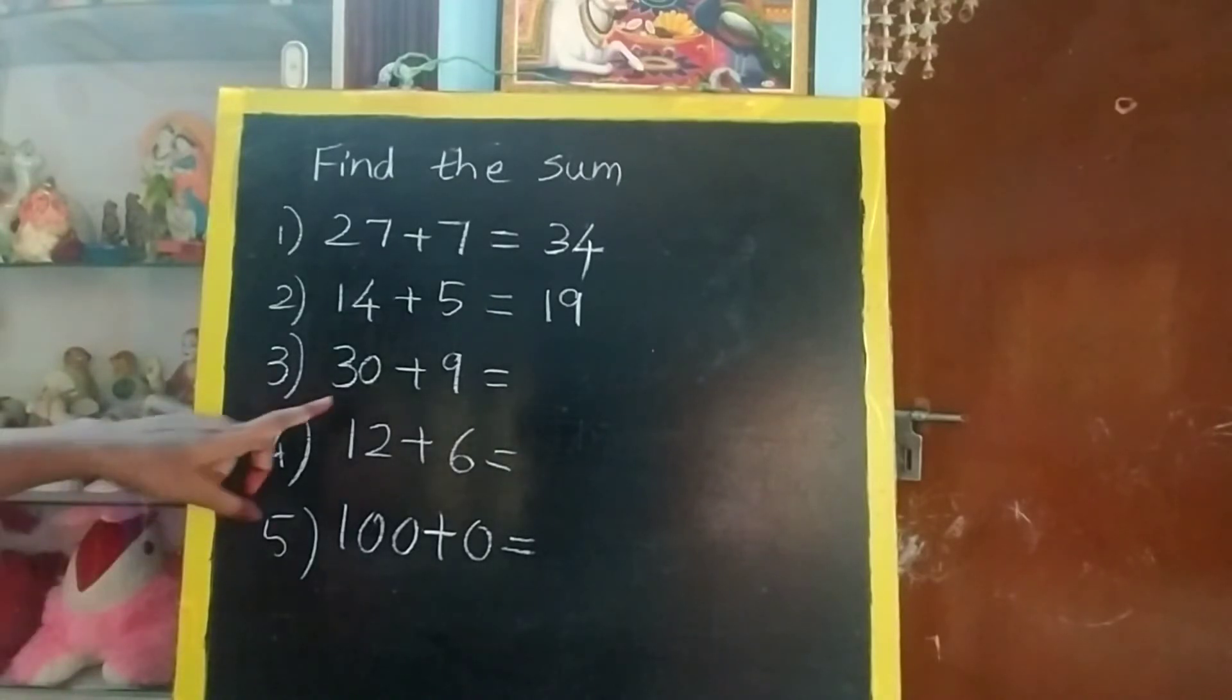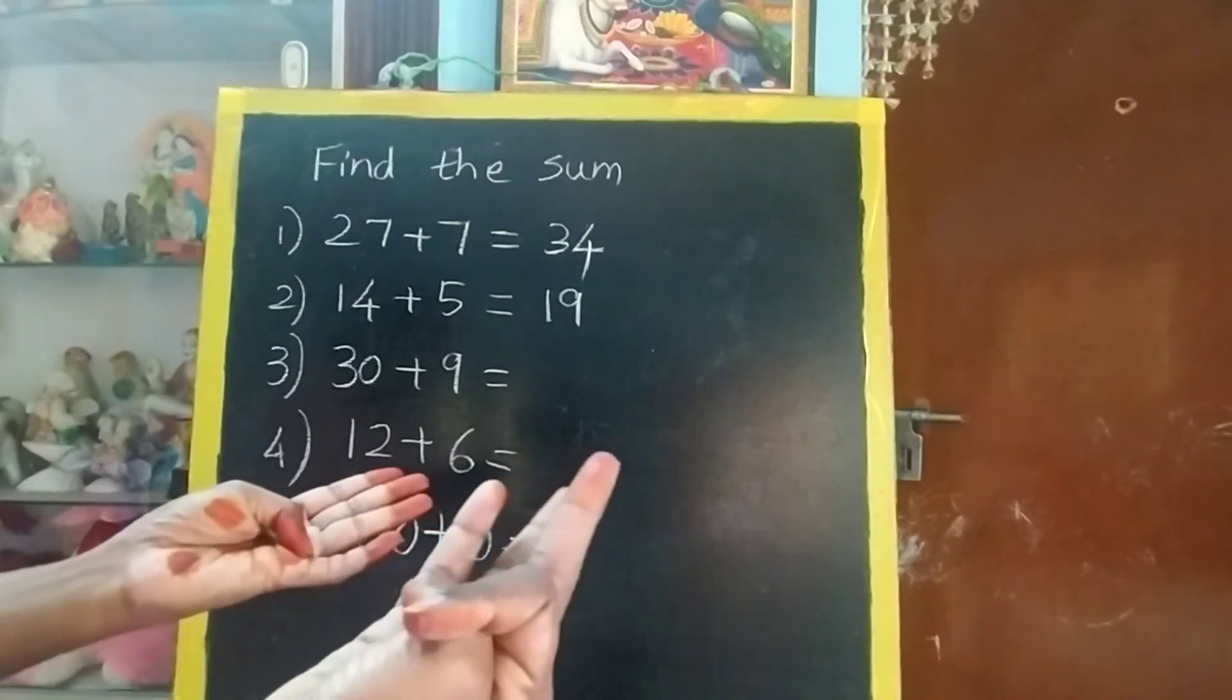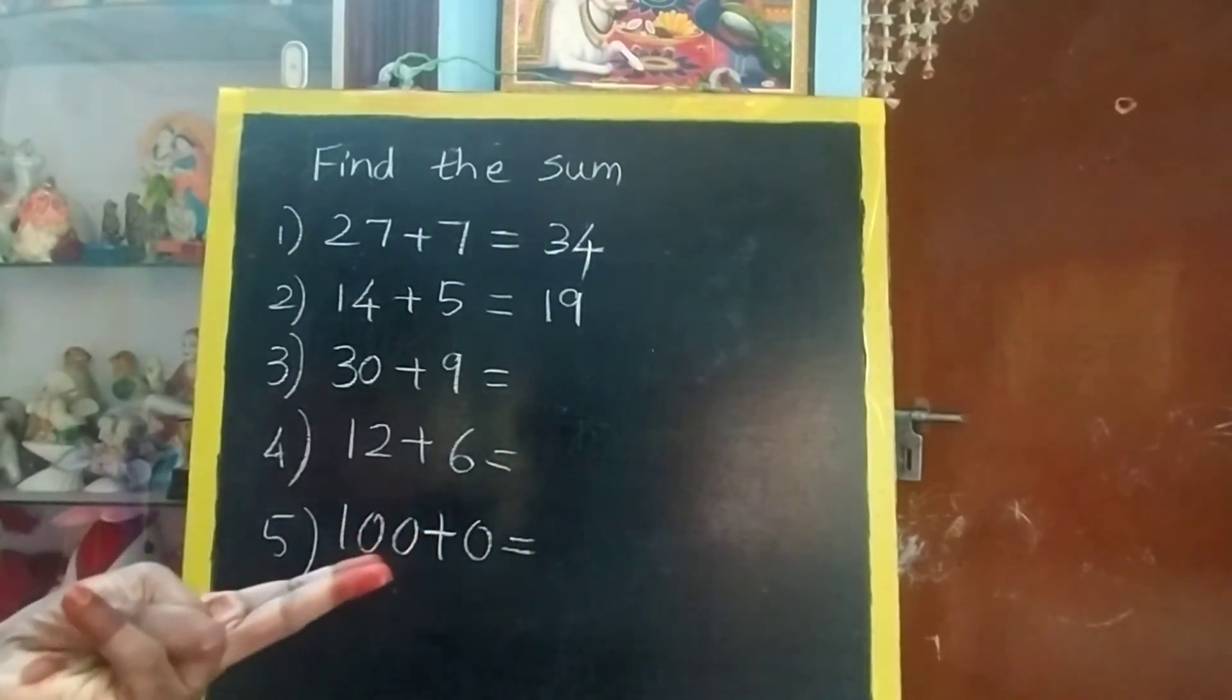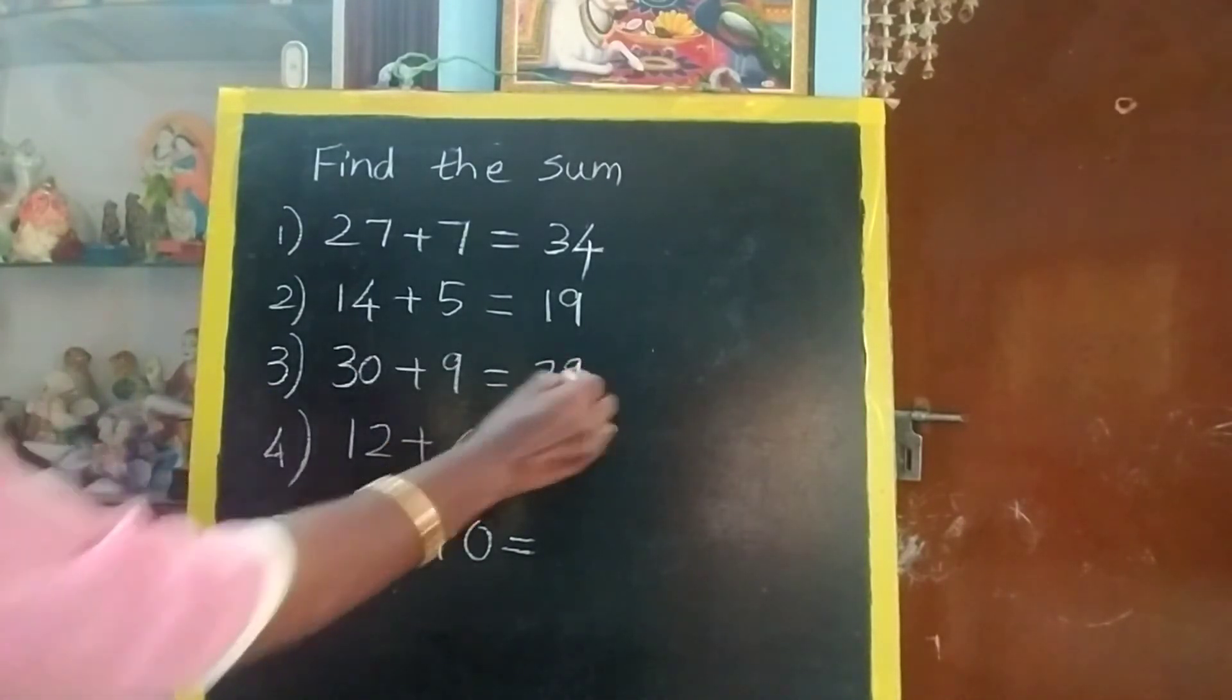Now third sum. 30 in the mind, 9 in the finger. After 30, 31, 32, 33, 34, 35, 36, 37, 38, 39. You have to count after numbers faster.